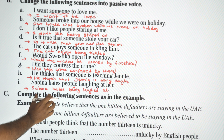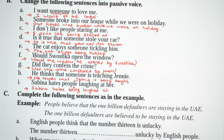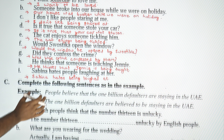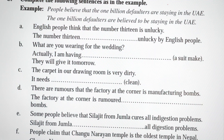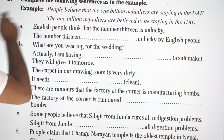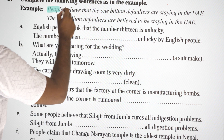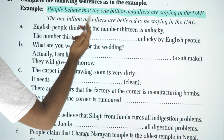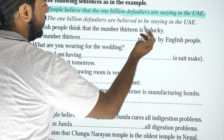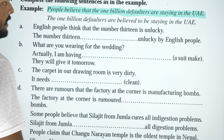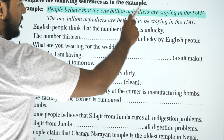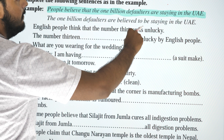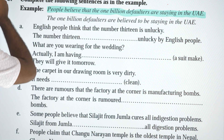That's the grammatical rule. Now, complete the following sentences as in the example. Example: 'People believe that one billion defaulters are staying in UAE.' Passive: 'One billion defaulters are believed to be staying in UAE.'